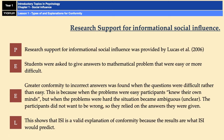There is also research support for informational social influence, from Lucas et al. in 2006. In this research, students were asked to give answers to maths problems that were either easy or more difficult. They found greater conformity to incorrect answers when the questions were difficult rather than easy — because when problems were easy, participants were confident in their own ability, but when problems were hard, the situation became more ambiguous and participants relied on answers given by others considered to be experts. This is exactly what informational social influence would predict.